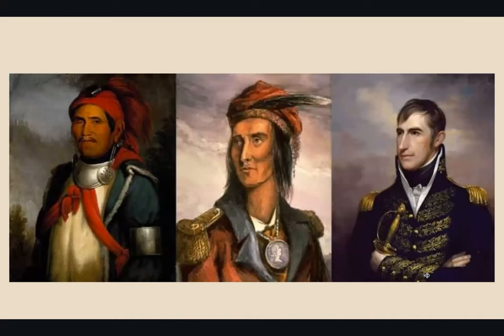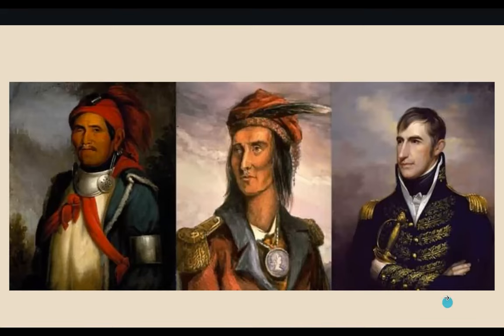There's Tenskwatawa the Prophet on the left, Tecumseh in the middle, and on the right is William Henry Harrison of the U.S. Army, fighting in the upper Northwest because these guys began attacking the frontier. The British supplied them. When we went to war in the War of 1812 over shipping, the British exploited the natives. The United States was almost surrounded — Canada on the north, the Indians to the west being supplied by the British, and in the south, Florida, which was Spanish territory allied with the British.